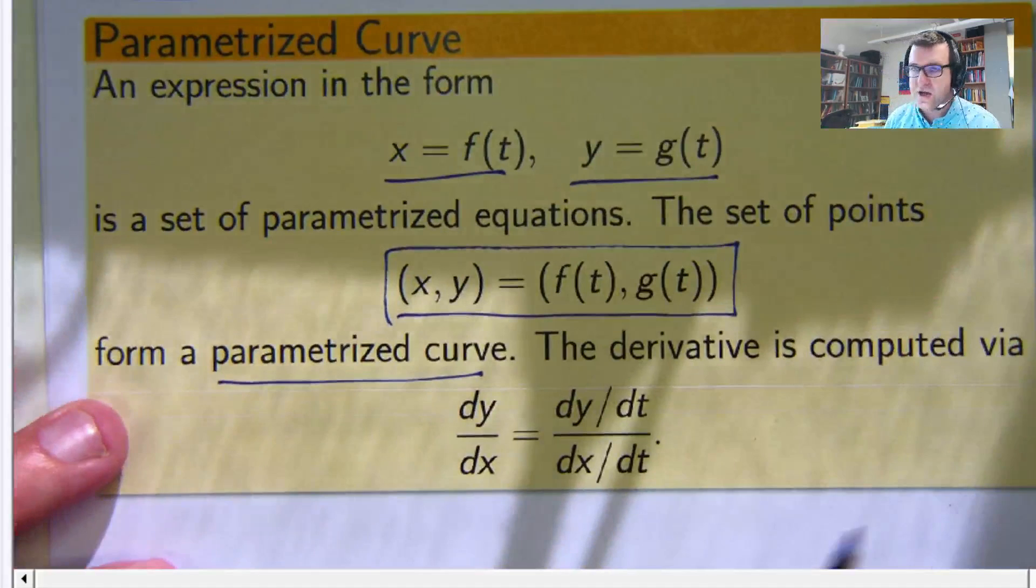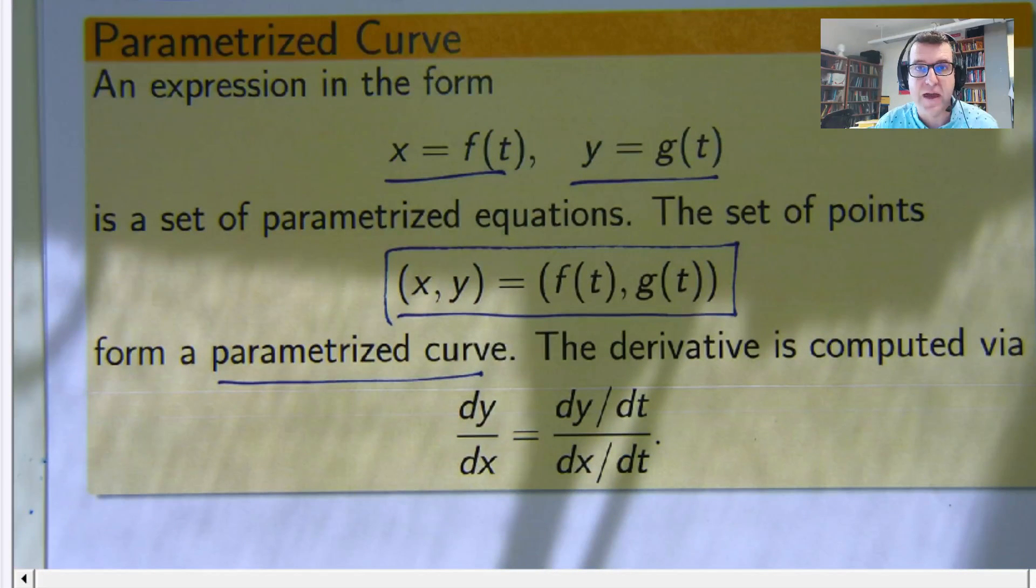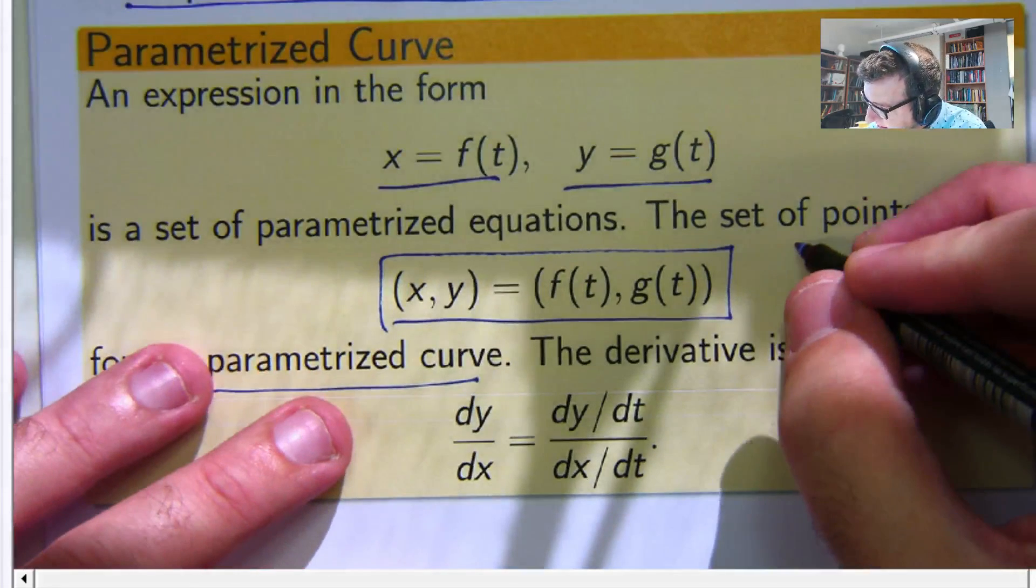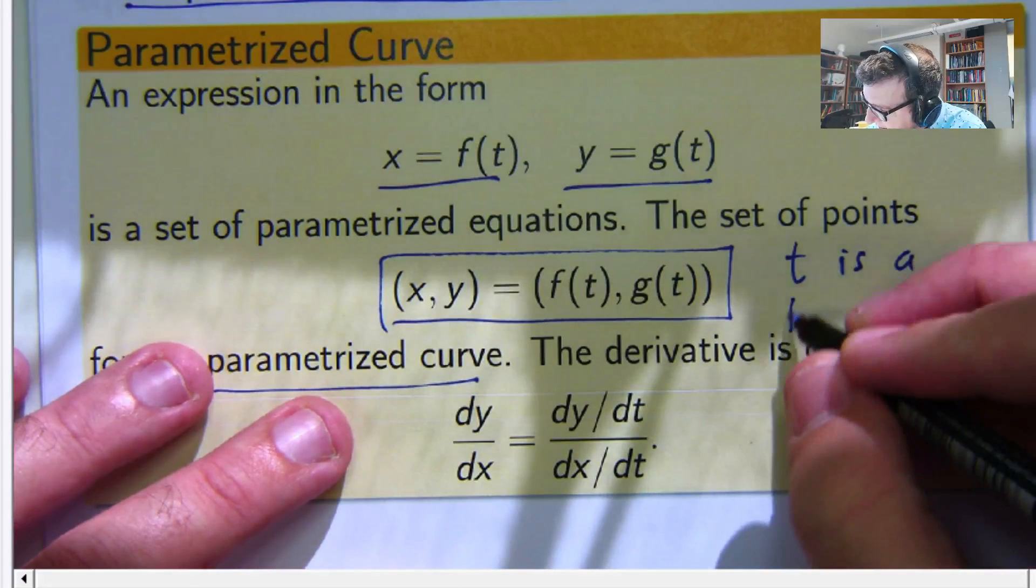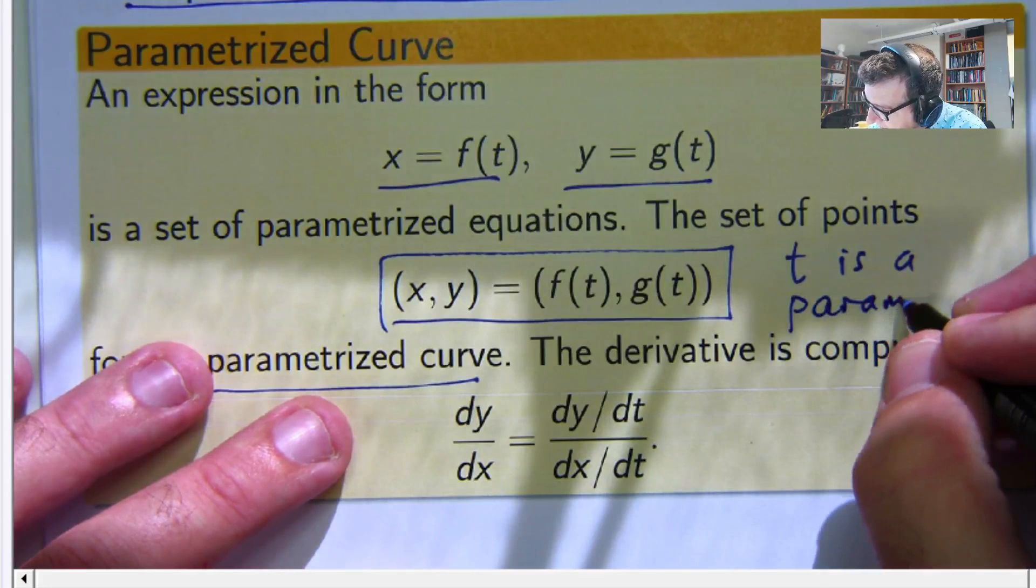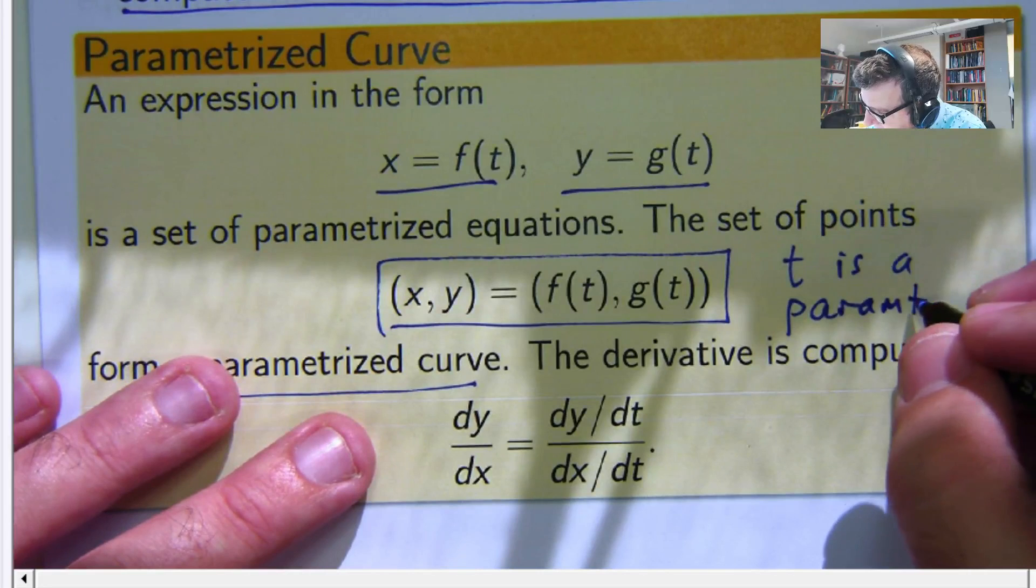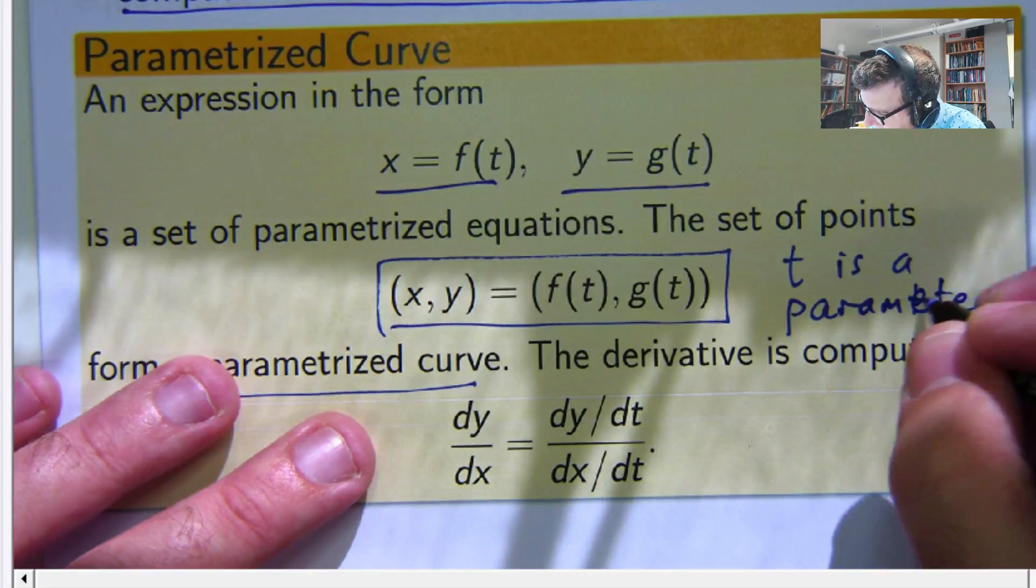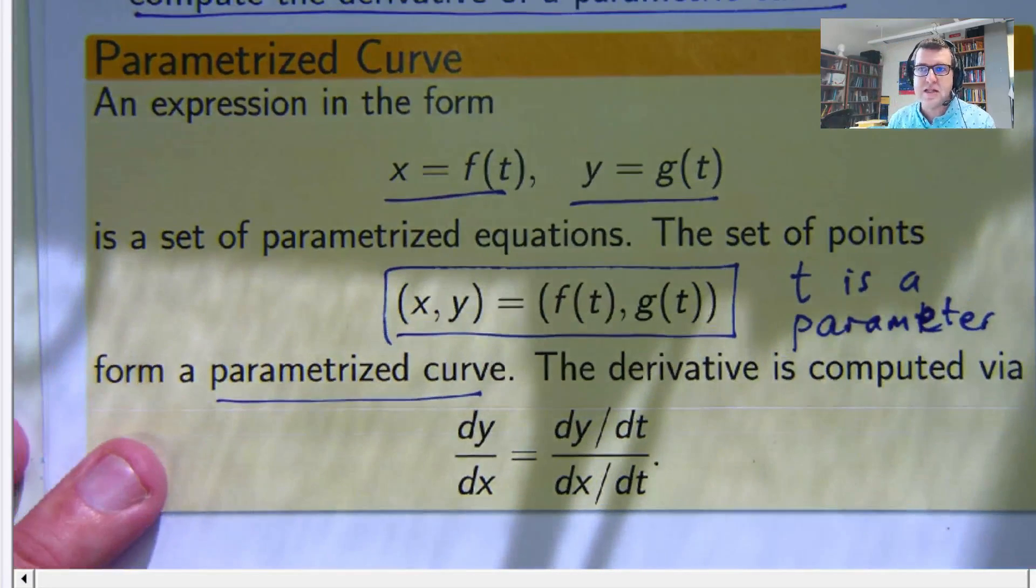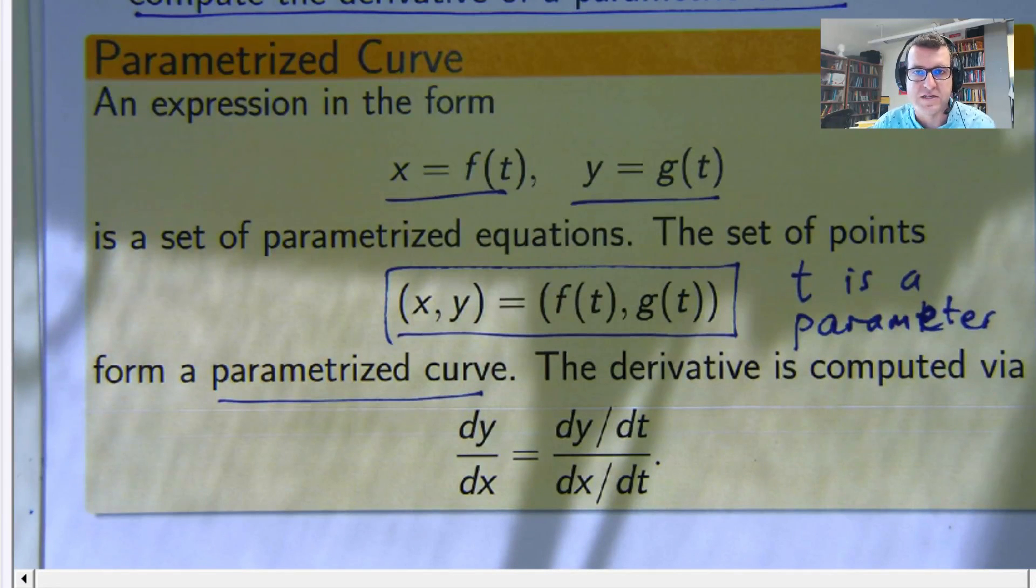Depending on what values of t you have, that's how much of the curve, it sort of controls how much of the curve is being described. So in this case, the t is known as a parameter. It's kind of like a variable for x and y to work with.